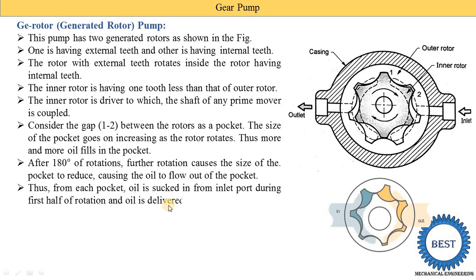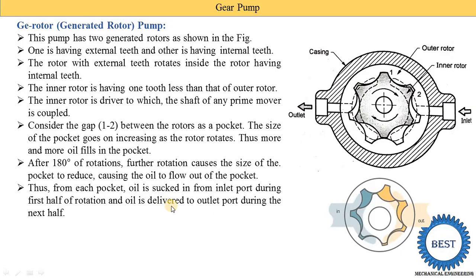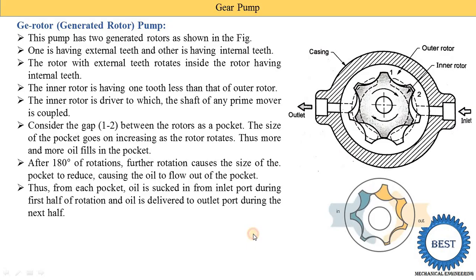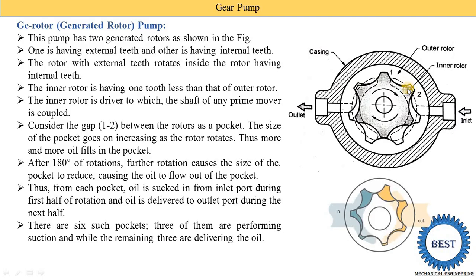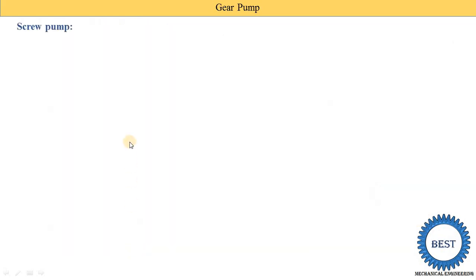From each pocket, oil is sucked in from the inlet during the first half rotation, and oil is delivered to the outlet during the next half. There are six such pockets — three are performing suction while the remaining three are delivering oil. Hence the flow is continuous.